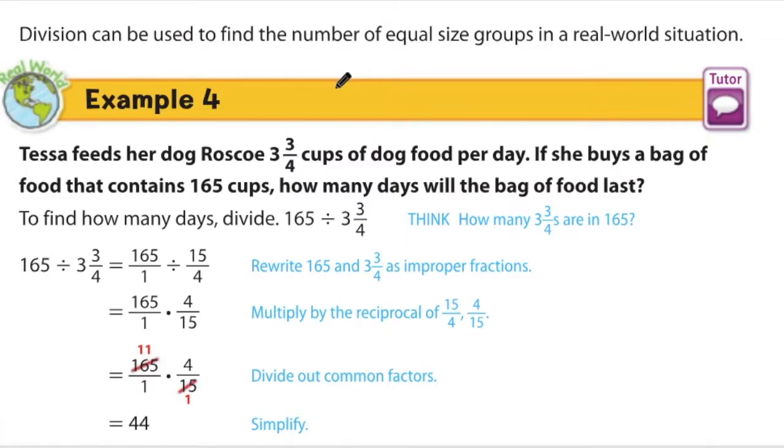Dividing fractions can be used to solve situations, like example 4. Tessa feeds her dog Roscoe 3 1⁄4 cups of dog food per day, and if she buys a bag of food that contains 165 cups, how many days will the bag of food last? The division problem is set up here for you. Remember that 165 gets put over 1. 3 3⁄4 gets changed to an improper fraction. The reciprocal takes place, then multiplication and canceling to find the answer.